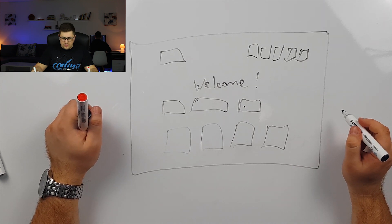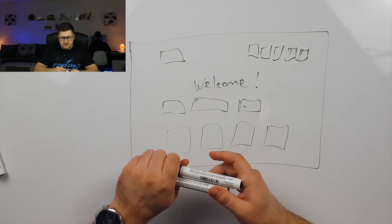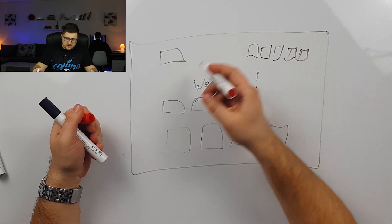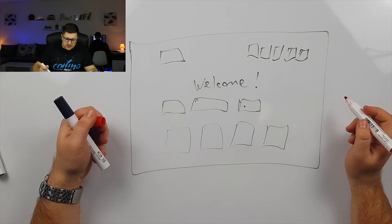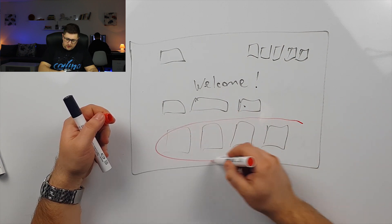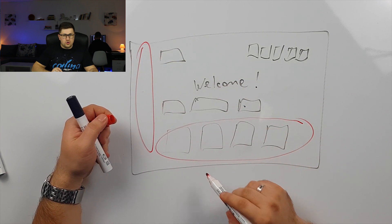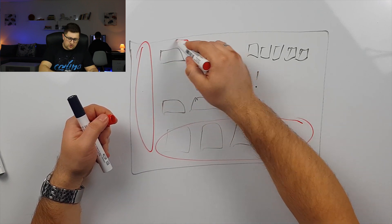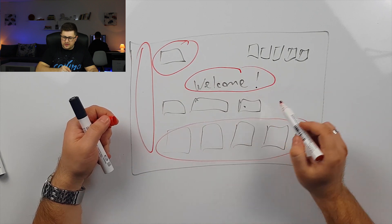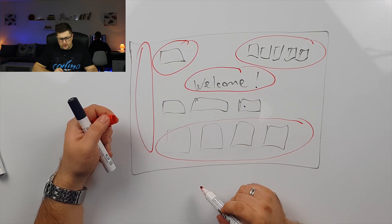and then you can have some posts from your blog here, and so on. Now when we analyze this, you can see that this website consists of different columns, different rows, images, text, links, and so on.